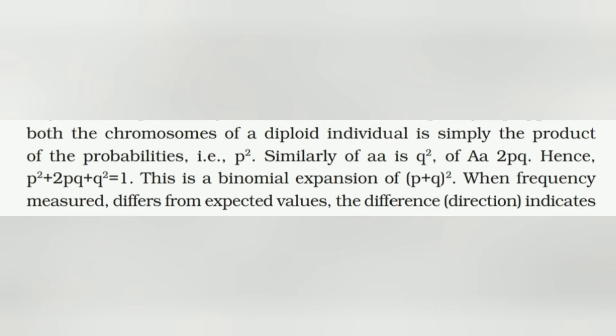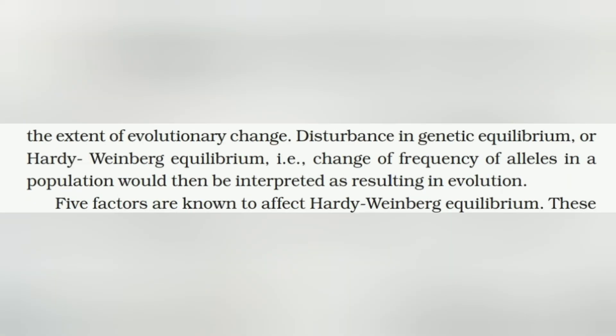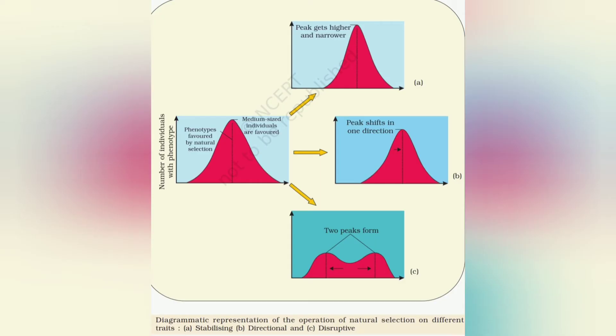When the frequency measured differs from the expected value, the difference indicates the extent of evolutionary change. Disturbance in the genetic equilibrium, or Hardy-Weinberg equilibrium — that is, a change in frequency of alleles in the population — would then be interpreted as resulting in evolution. Five factors are known to affect Hardy-Weinberg equilibrium. The diagrammatic representation shows the operation of natural selection on different traits: A shows stabilizing, B shows directional, and C shows disruptive natural selection.